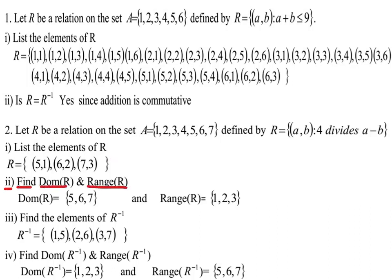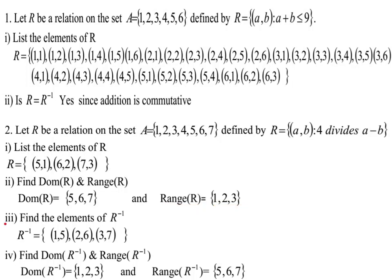Next, find the domain and range of R. Since R is {(5,1), (6,2), (7,3)}, the domain of R is {5, 6, 7} and the range of R is {1, 2, 3}. For part three, find the elements of R inverse. By definition, R inverse contains the ordered pair (b, a) where (a, b) is an element of R, so R inverse is {(1,5), (2,6), (3,7)}.